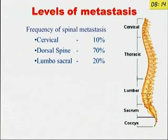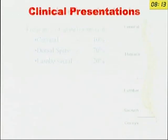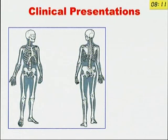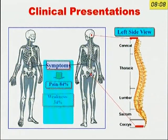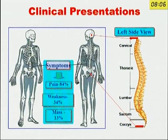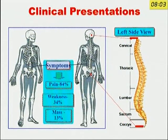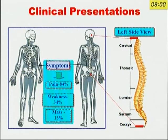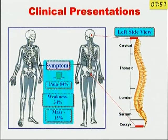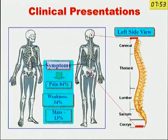The lumbosacral area accounts for 20 percent of cases. The most common symptom is pain — 84 percent of cases will present with pain, 34 percent with weakness, and malalignment and deformity will be visible in only 13 percent of patients.